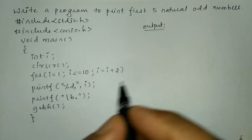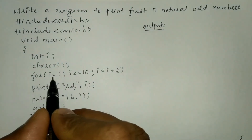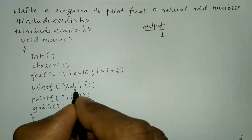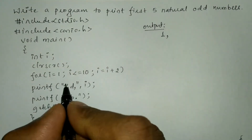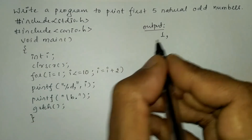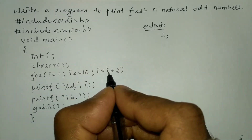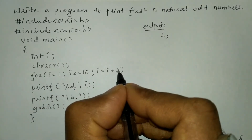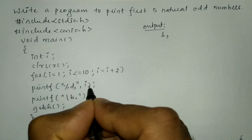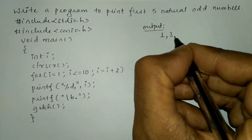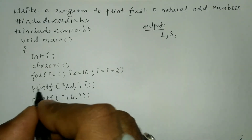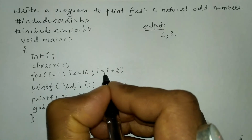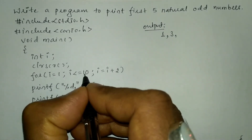Now I'm going to write the curly closing brace for the main function. Let us trace the output. i is initialized to 1, so it prints 1 and the comma. 1 is less than or equal to 10, so the condition is true. Control transfers back to the for loop, incrementing i by 2: 1 plus 2 becomes 3. 3 is less than or equal to 10 — condition is true — so it prints 3, and the comma is printed as well.